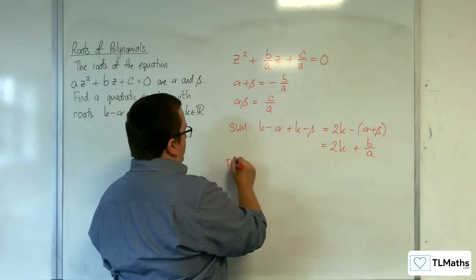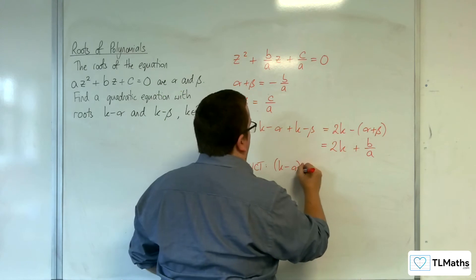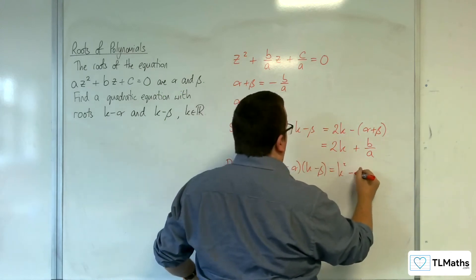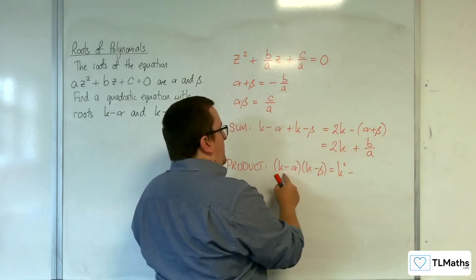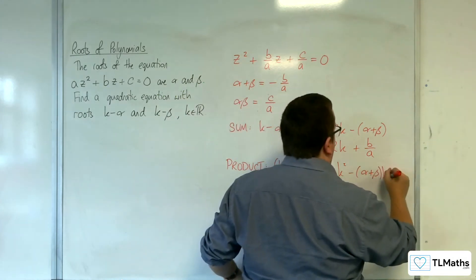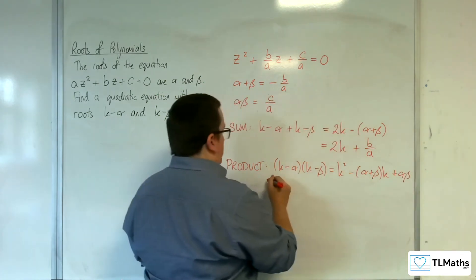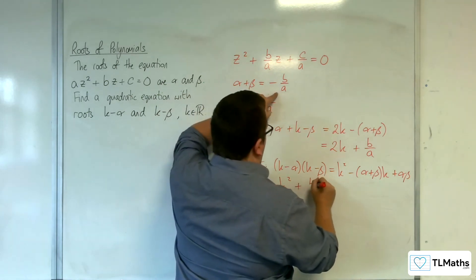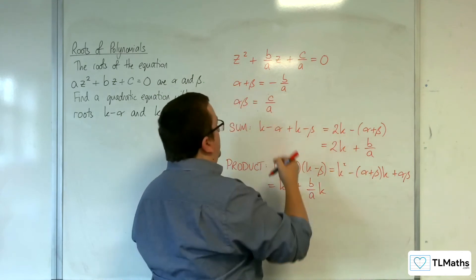So the product is k take away alpha times k take away beta, which is equal to k squared take away. So I'm going to get alpha k and take away alpha k and take away beta k. So take away alpha plus beta k plus alpha beta. So I've got the k squared take away alpha plus beta, so plus b over a times k plus alpha beta, so plus c over a.